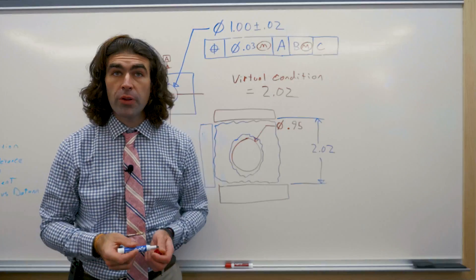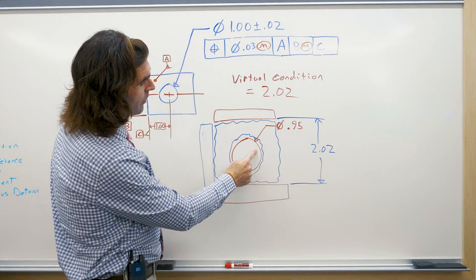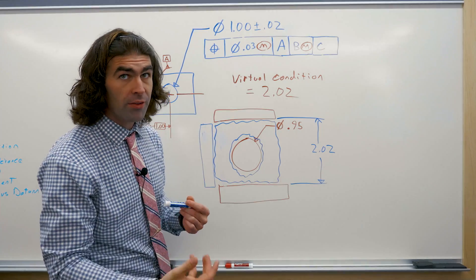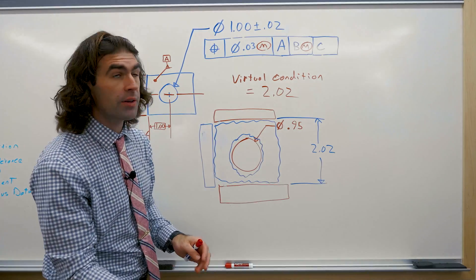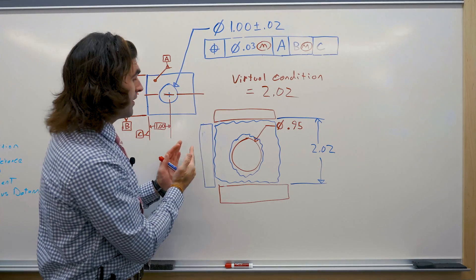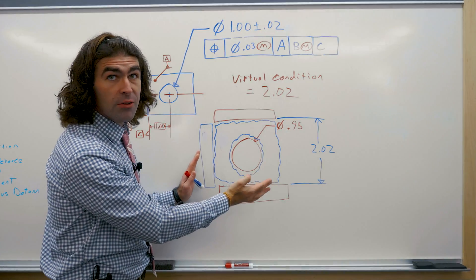In this case the fixture for the part would look something like this. You'd have the virtual condition of this feature. So you'd have a pin or a boss made to gauge tolerances. You'd have the two parallel planes set to the virtual condition datum B which is right here. Datum C would just be a plane the part has to make one point of contact with.